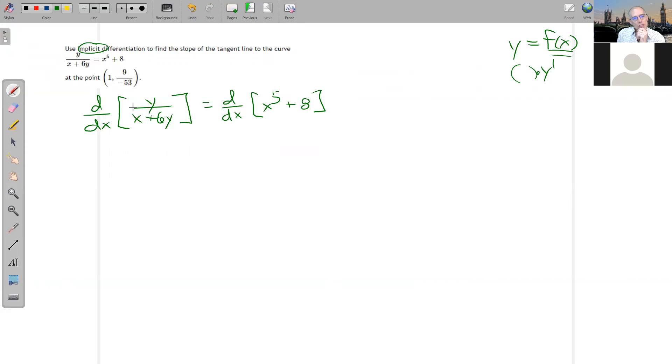So on this side, I have to apply the quotient rule. So the quotient rule says take the derivative of the top first. Well, the derivative of Y with respect to X is Y prime, right? Remember Y prime is dy dx. So I'm just going to say the derivative of the top is Y prime and then multiply by the bottom X plus 6Y.